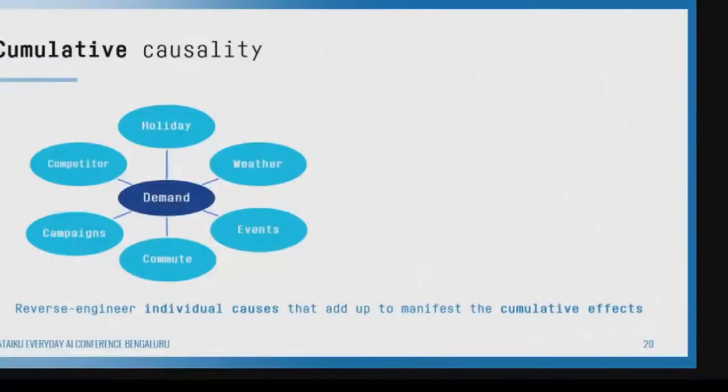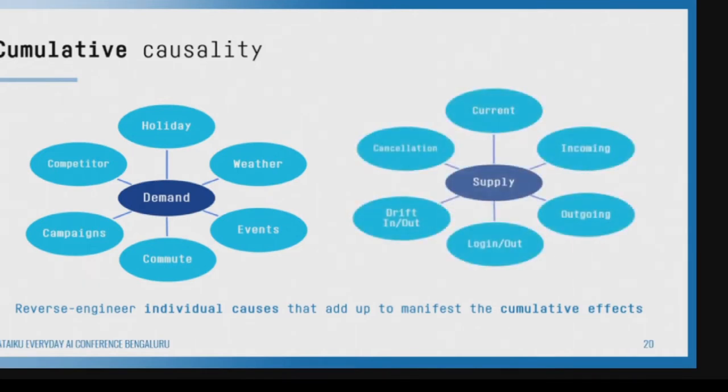Another notion of causality is cumulative causality. How much demand for a cab is going to be needed in a particular location in a particular 15 minutes? The demand could be a cumulative of multiple factors — is there a stadium event? Is there a weather problem? Is it commute time? Is a competitor doing something that makes my demand low? Am I running a campaign that makes my demand high?